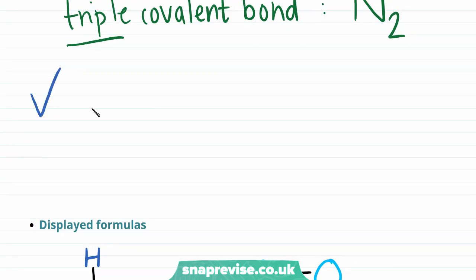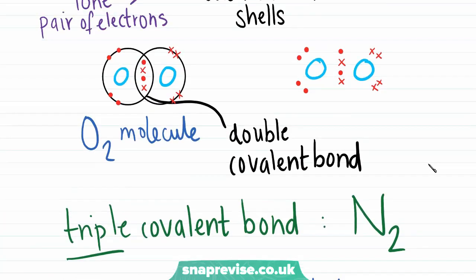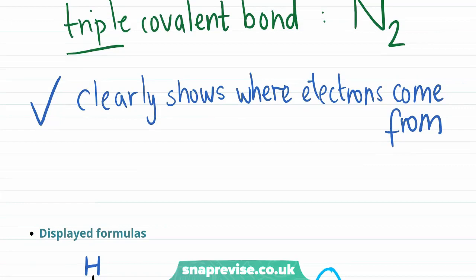But if not, we'll revisit them here quickly. One of the good things about a dot and cross diagram is it clearly shows where electrons have come from. And this is one of the clear benefits. For example, you can easily see that each oxygen atom has contributed two electrons to this double covalent bond.